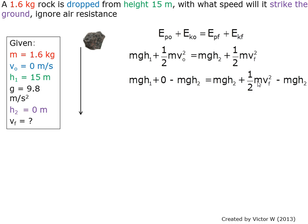To isolate the variable we are looking for, final velocity, we need to subtract mgh₂ from each side of the equation, giving us ½mv² equals mgh₁ minus mgh₂.